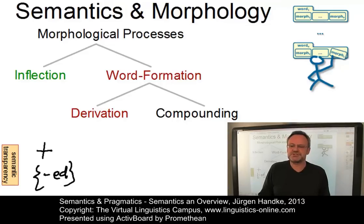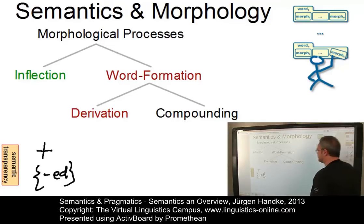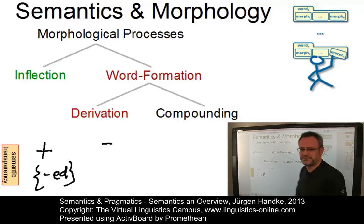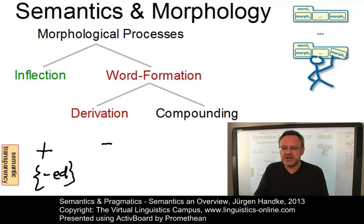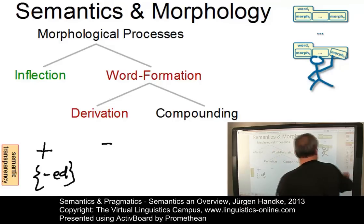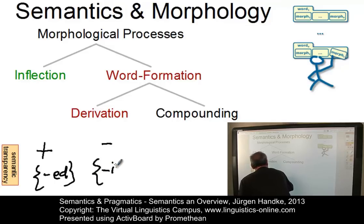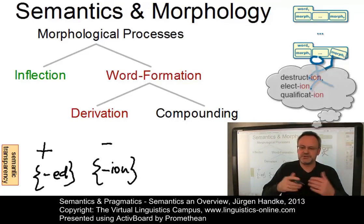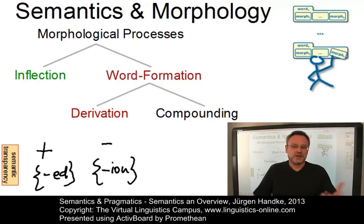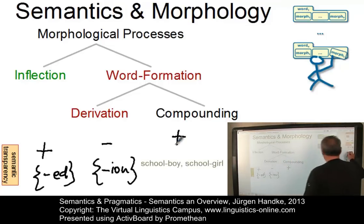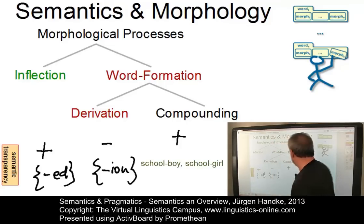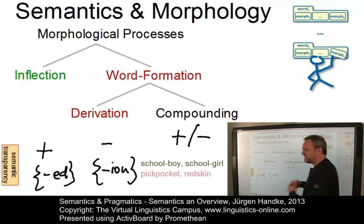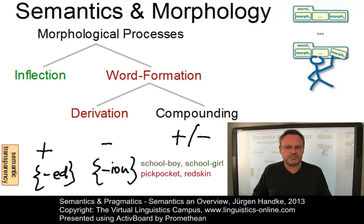In derivational processes, the meaning of the affixes involved is in many cases not clearly definable — the affixes cannot be straightforwardly associated with a fixed meaning. Unlike inflectional affixes, they are semantically non-transparent. An example is the affix -ION in items such as 'destruction', 'election', 'qualification'. Then there are compounds, which can be fully transparent as in endocentric compounds such as 'schoolboy' or 'schoolgirl' — a schoolboy is a boy, a schoolgirl is a girl — or totally intransparent as in exocentric compounds such as 'pickpocket', which is not a type of pocket, or 'redskin', which is not a type of skin.